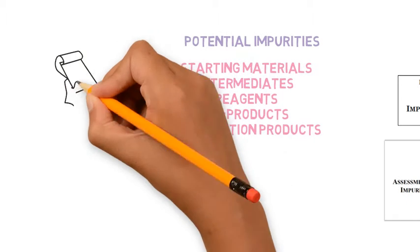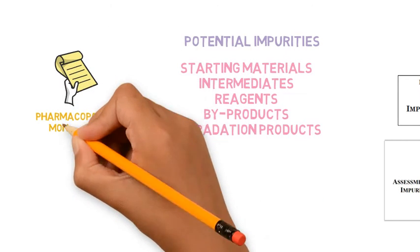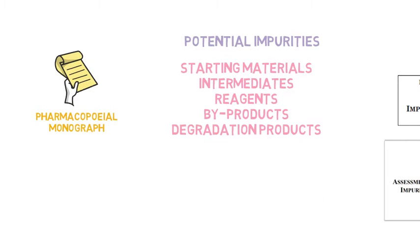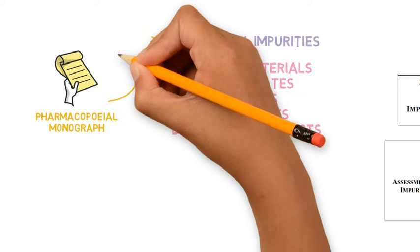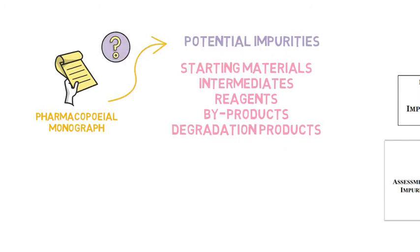In case a pharmacopoeial monograph is available for that API, the impurities described in the monograph also need to be discussed to understand which ones are indeed potential impurities for that route of synthesis and if controlling all those impurities is applicable.